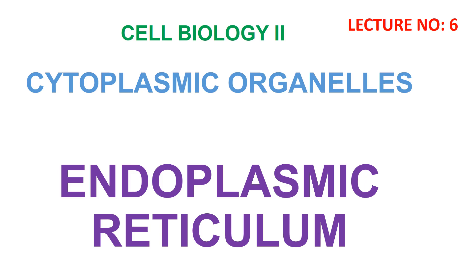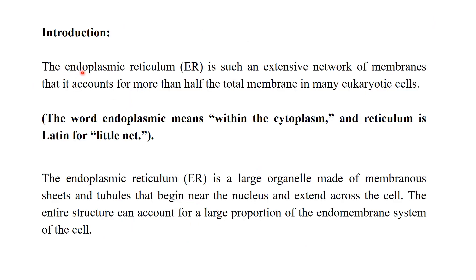Welcome to the new chapter of cell biology. We are going to start the cytoplasmic organelles. Today we will discuss the endoplasmic reticulum, which is a very important organelle of the cell. It starts from the nuclear membrane and ends with the plasma membrane. It is the most important component of the endomembrane system. In this lecture we will discuss the introduction, composition, structure, types, and functions of the endoplasmic reticulum.